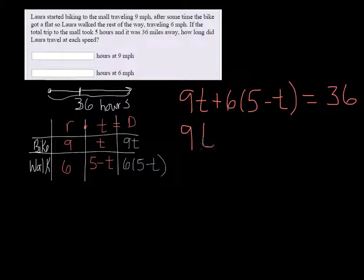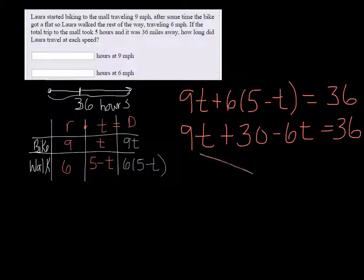Distribute the six, we get nine t plus 30 minus six t equals 36. Combining like terms, nine minus six t is three t plus 30 equals 36.